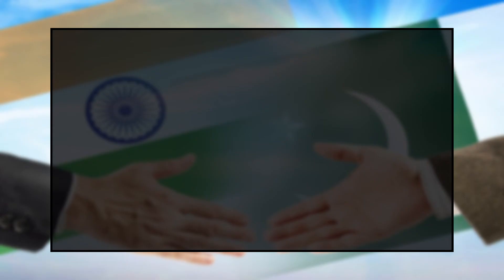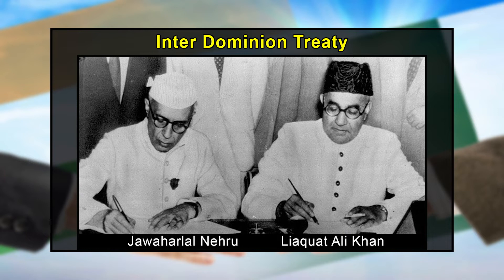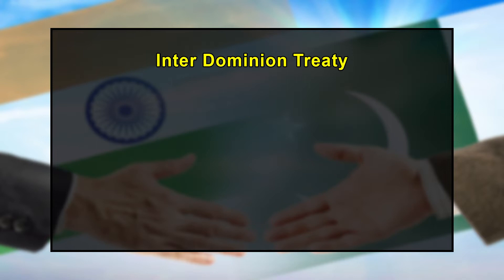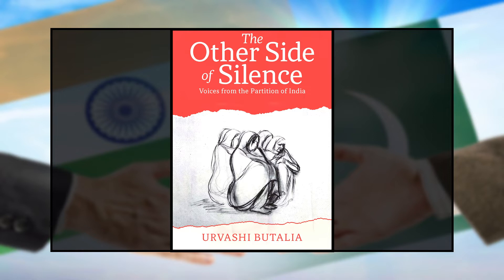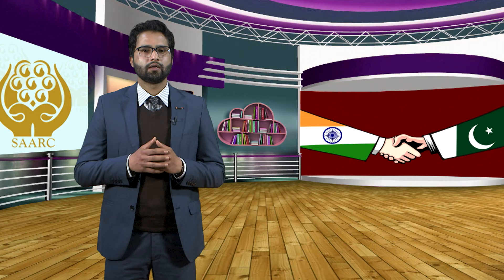While the conflicted relationship has been dominant, there have been rare moments of cooperation. One such rare moment was the Inter-Dominion Treaty signed by Prime Ministers Liaquat Ali Khan of Pakistan and Jawaharlal Nehru of India in December 1947. Under this treaty, both countries resolved to trace, recover, and return to their respective communities the women abducted and forcibly married during partition-related violence. Students interested in this topic may read Urvashi Bhattalia's award-winning book, The Other Side of Silence, published by Penguin Books in 1998.